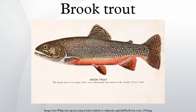Brook trout have a diverse diet that includes larval, pupal, and adult forms of aquatic insects, and adult forms of terrestrial insects that fall into the water, crustaceans, frogs and other amphibians, mollusks, smaller fish, invertebrates, and even small aquatic mammals such as voles.